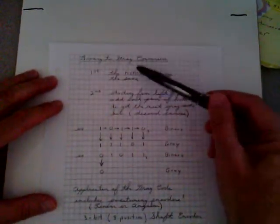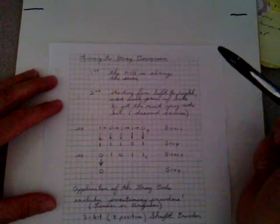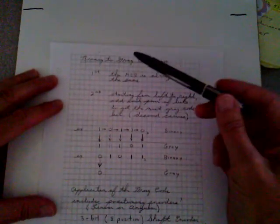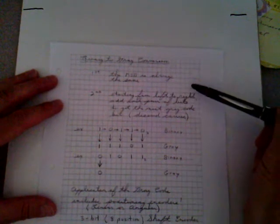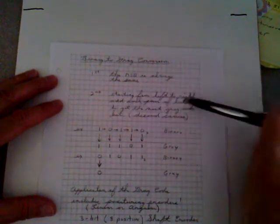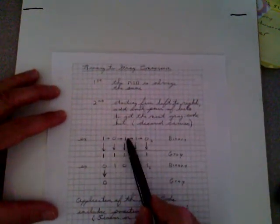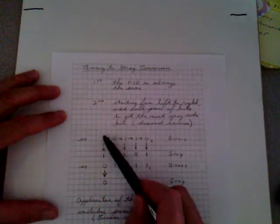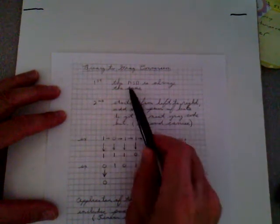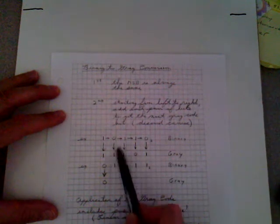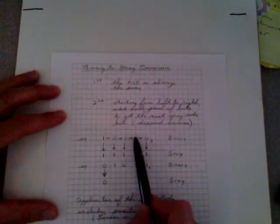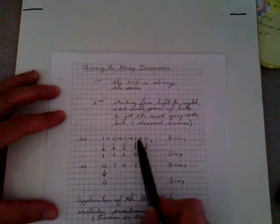On page 31, I'll show you how to convert from binary to gray code. It's really easy. First, take the most significant bit — it's always the same, bring it straight down. Then, starting from left to right, add each adjacent pair of bits to get the next gray code bit, discarding any carries. For example: bring down the first bit, then 1+0=1, 0+1=1, 1+1=0 (discard carry), 1+0=1. There's your gray code equivalent.